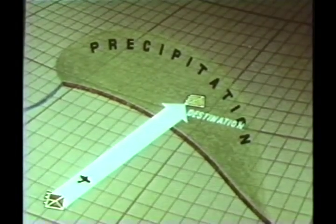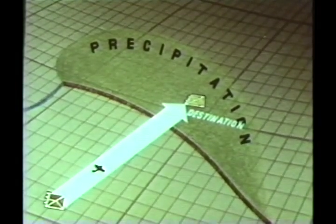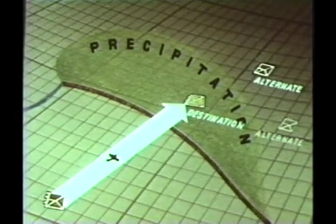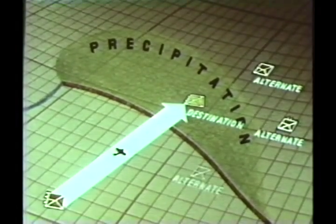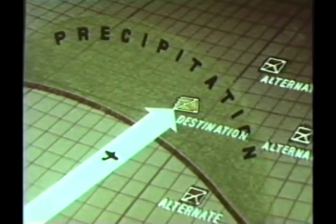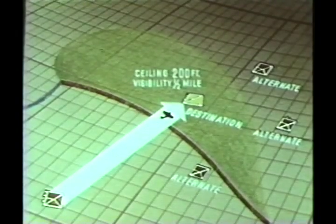Whenever you make a flight into warm frontal conditions, careful consideration should be given to pre-flight planning with your weather officer. If instrument conditions exist or are forecast for your destination, you must be prepared to reach an alternate field. This procedure is essential since the ceiling and visibility at your destination may go below landing minimums while you are en route, and on arrival you may be directed to proceed to an alternate field.